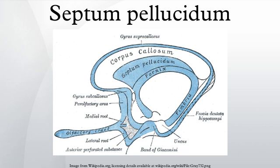The septum pellucidum consists of two layers or laminae of both white and grey matter. During fetal development there is a space between the two laminae called the cave of septum pellucidum which, in 90% of cases, disappears during infancy. The cavum is occasionally referred to as the fifth ventricle, but the term has lost favor in recent years as the space is usually not continuous with the ventricular system. Indeed, fifth ventricle has been used for other purposes in recent years.